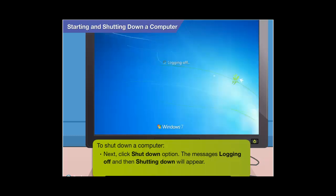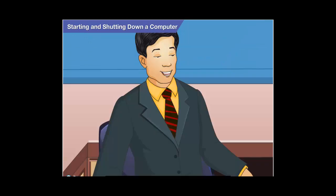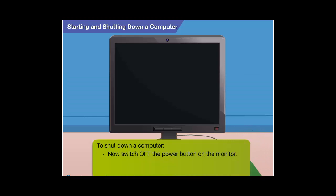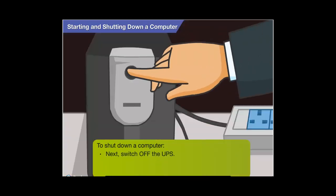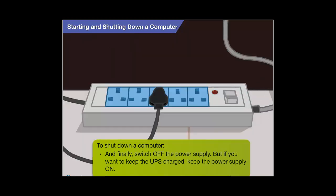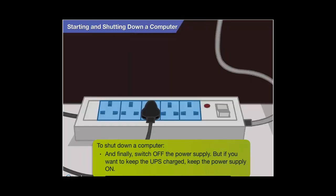The message 'logging off and then shutting down' will appear. Look, Uncle, the monitor has turned blank. Yes, Goggle. Now switch off the power button on the monitor. Next, switch off the UPS. And finally, switch off the power supply. But to keep the UPS charged, leave the power supply on.